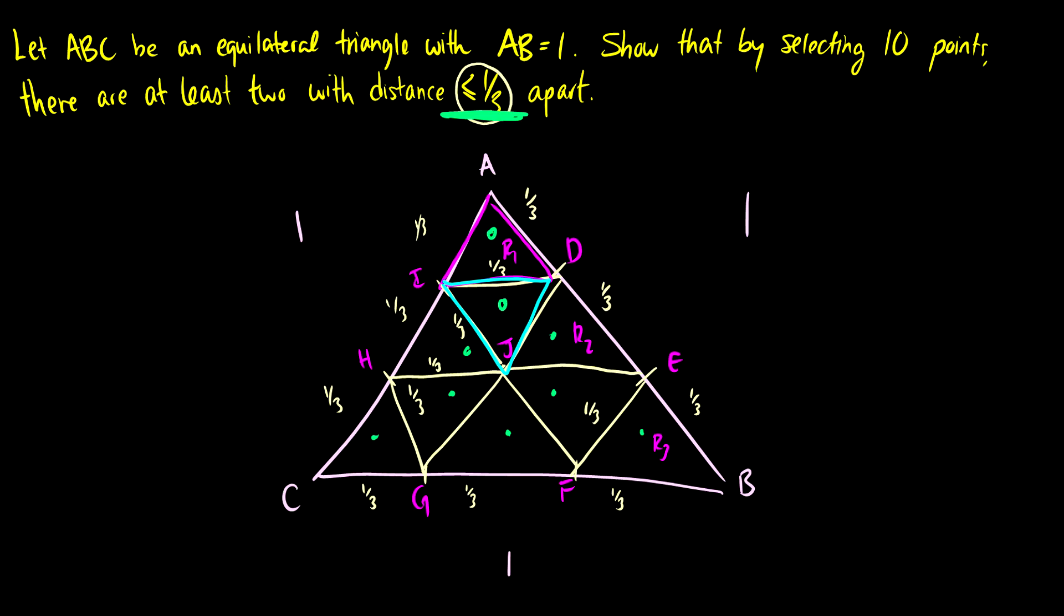And then with your regions, you can specify, okay, all of these regions at most have a distance of one third from the furthest point to the from two furthest points. And we're going to put a dot in each region. Then that 10th dot has to go in one of the same regions we've already done. And there's the proof.